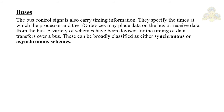A bus protocol is a set of rules that govern the behavior of various devices connected to the bus — when to place information on the bus, when to assert control signals, and so on. The bus lines used for transferring data may be grouped into three types: data lines, address lines, and control lines.